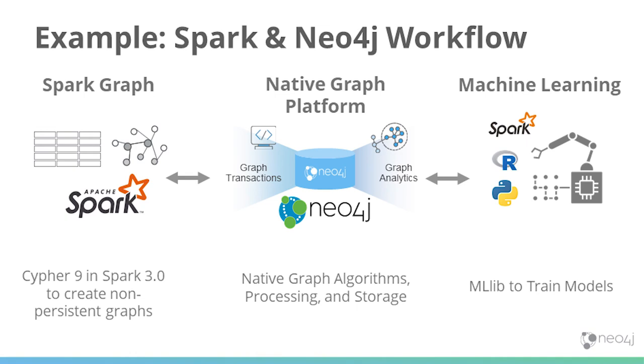In Spark, you have data frames using Spark Graph, which will be part of Spark 3.0. We've rewritten graph frames to use our property graph model. You can take your data frame and map it to a graph structure — this lets you start to experiment and ask: do I have a graph problem? What does my graph look like and what can I get out of it? In Spark these graphs are immutable — it's a projection mapping back to a table, so not as efficient, but it gets you started.